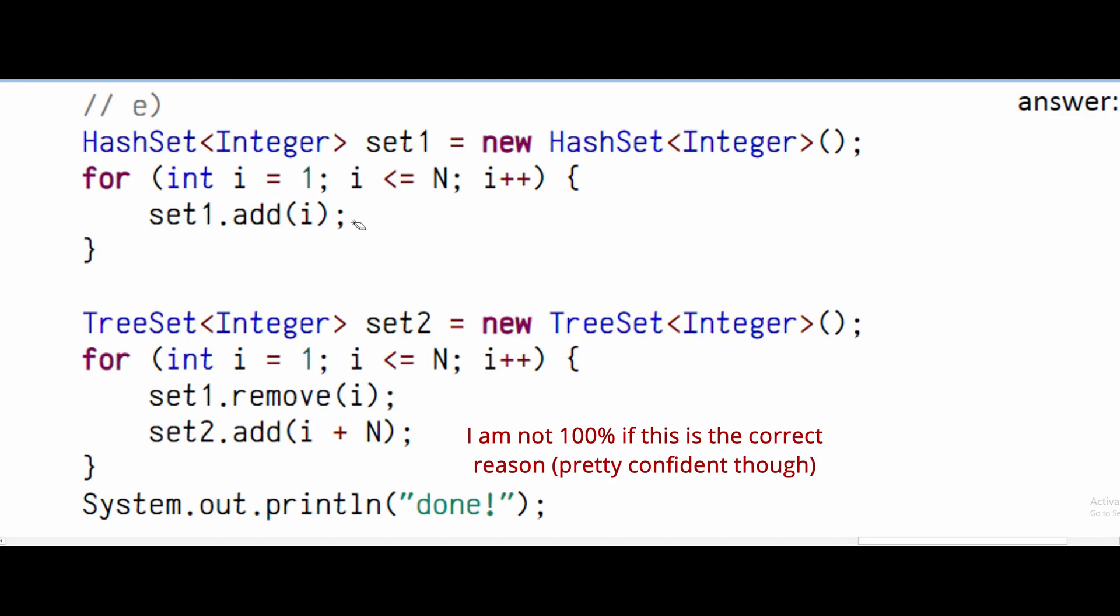For part E, we have two for loops. We have this which is a constant, this is also a constant, and this is also a constant. So we're not going to be looking at those. We're only going to be focusing on this for loop and this for loop right here.